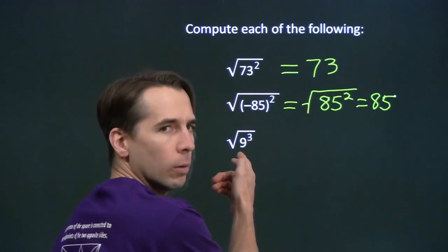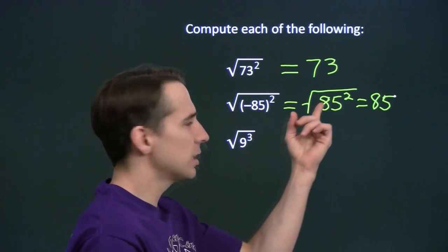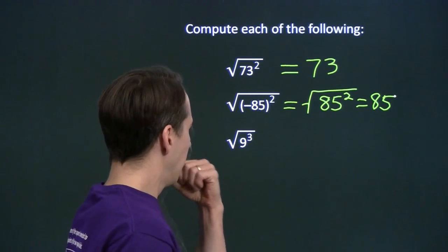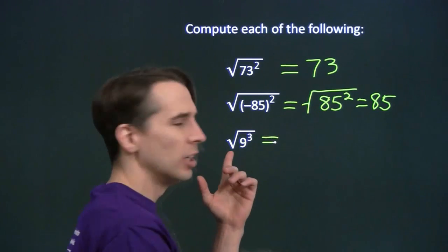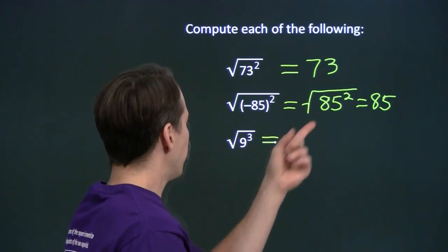Now, uh-oh. That's a cube, not a square. We know how to take the square root of a square, but a cube. Well, I mean, 9 is a perfect square. So maybe we can use that fact to turn this cube into a square because we know how to take the square root of a perfect square.